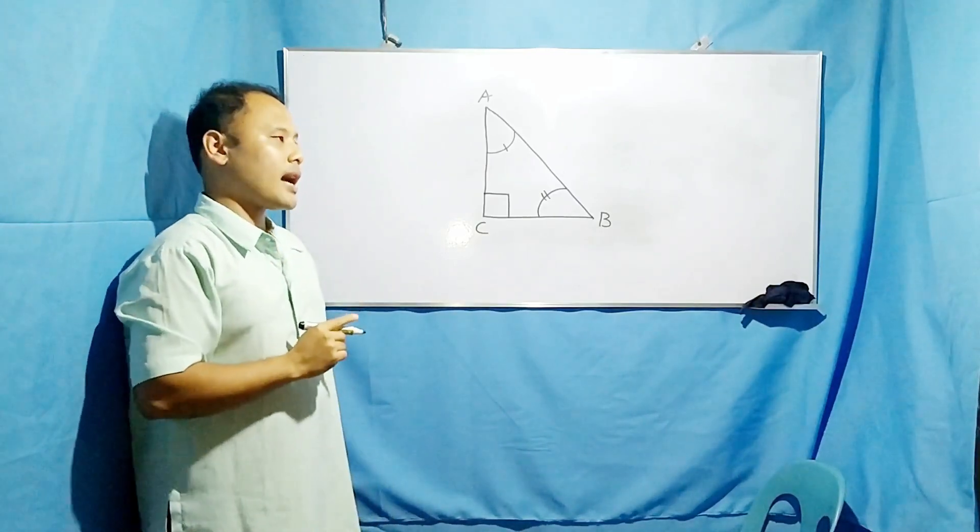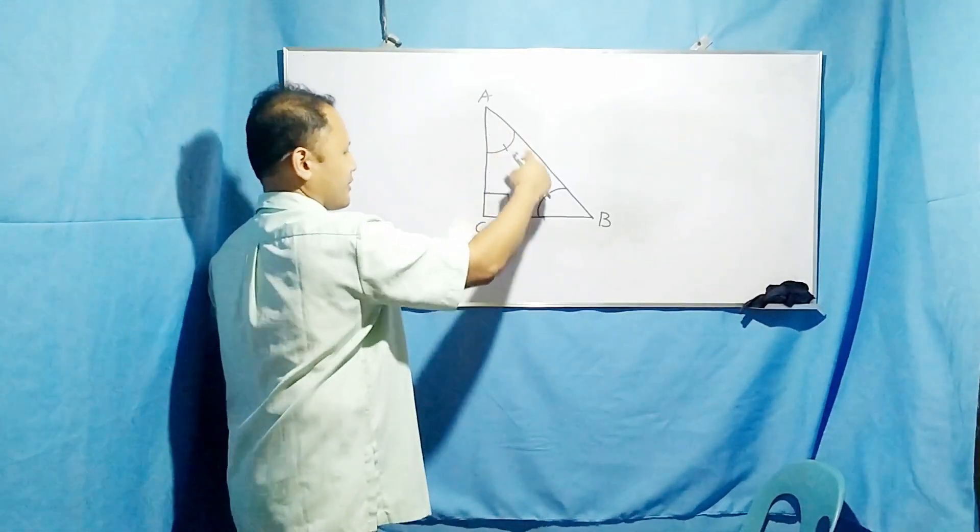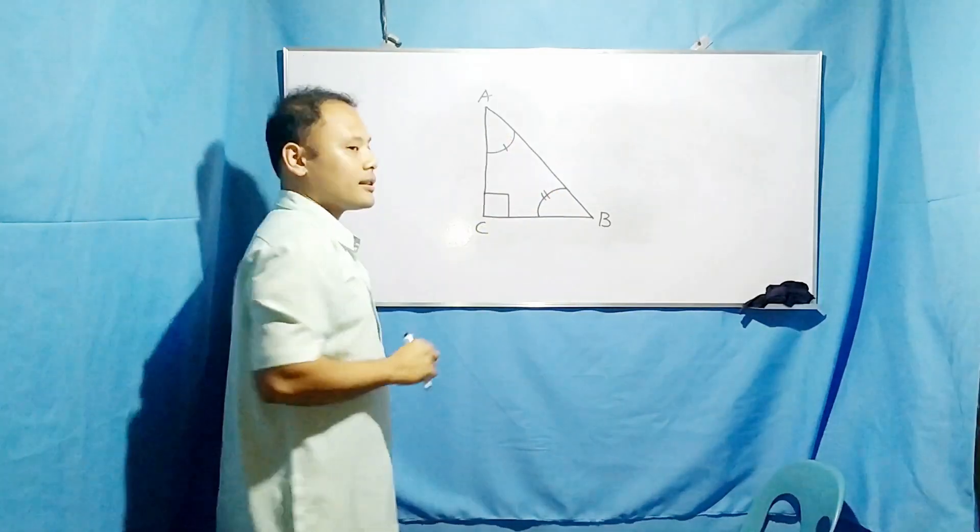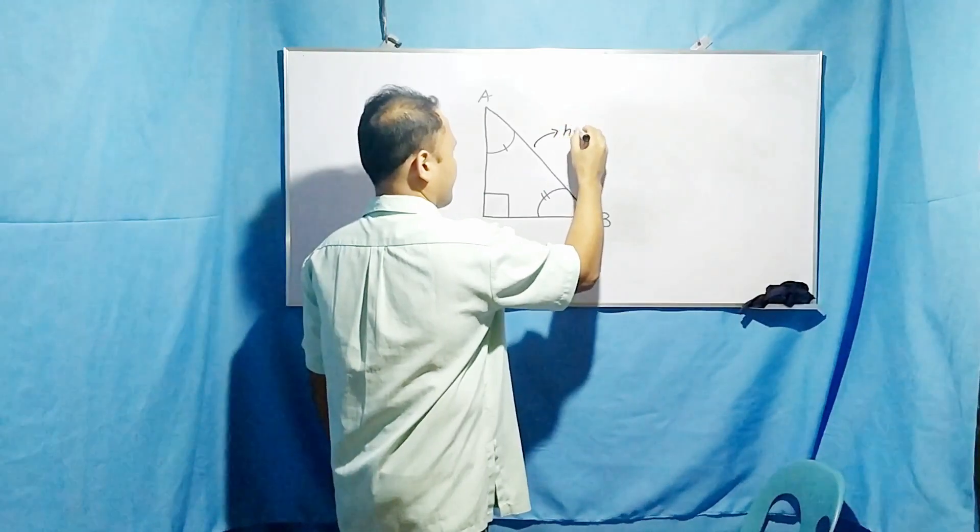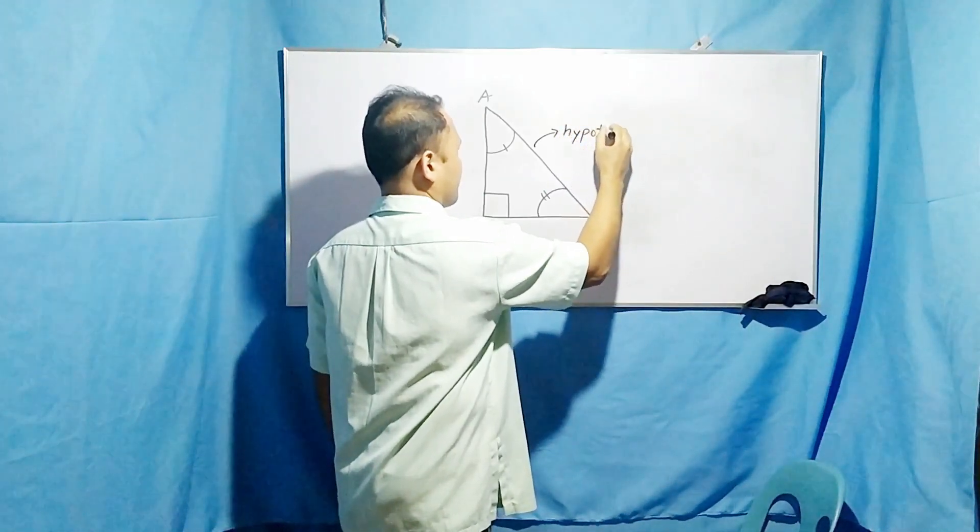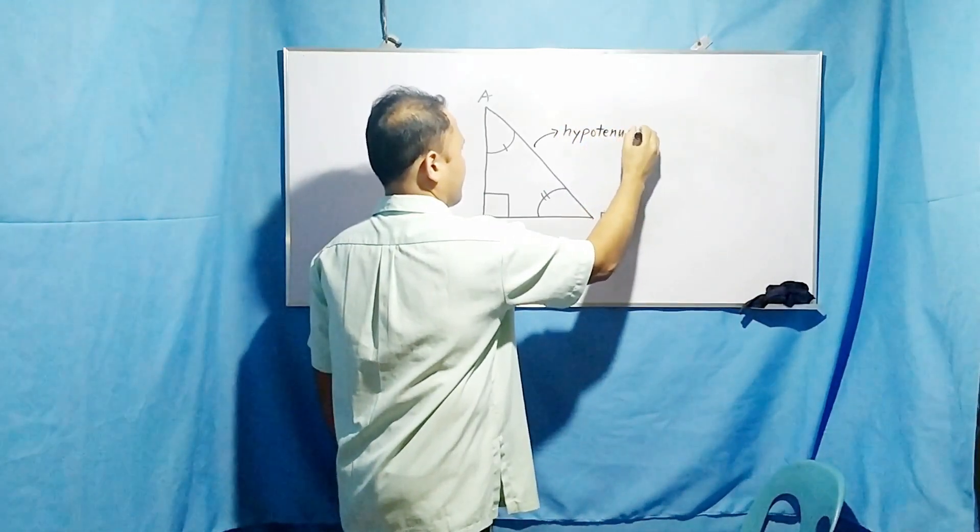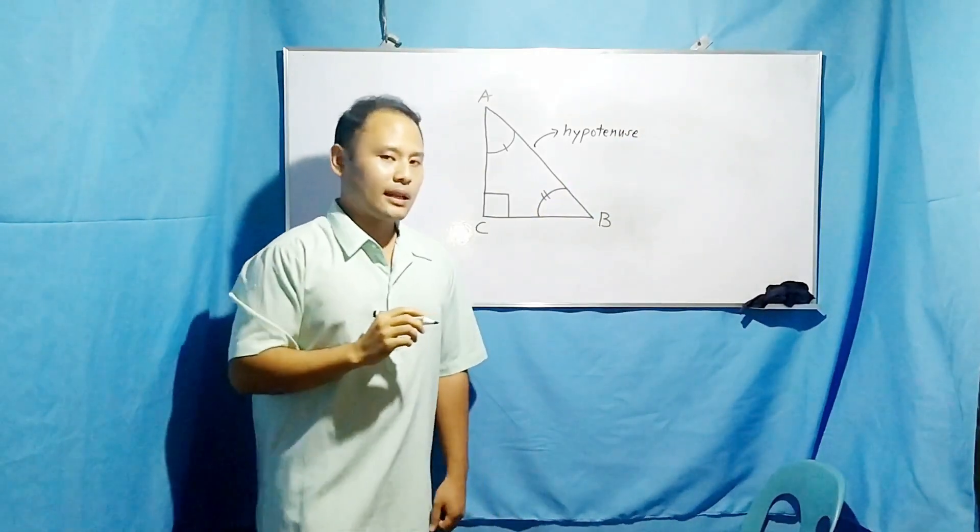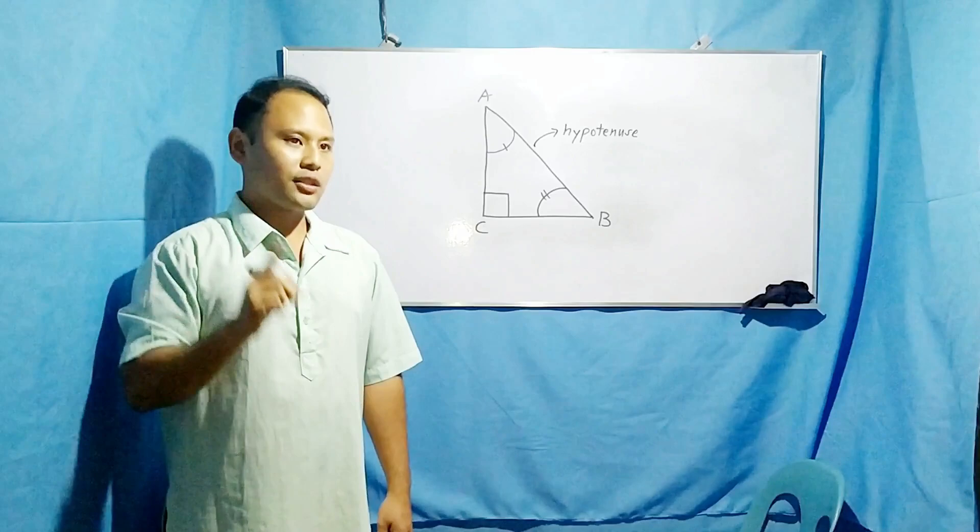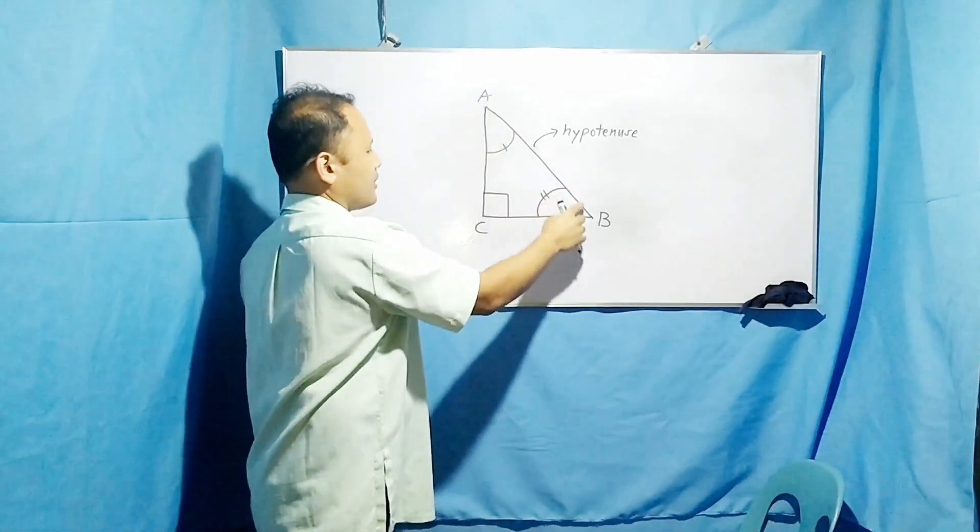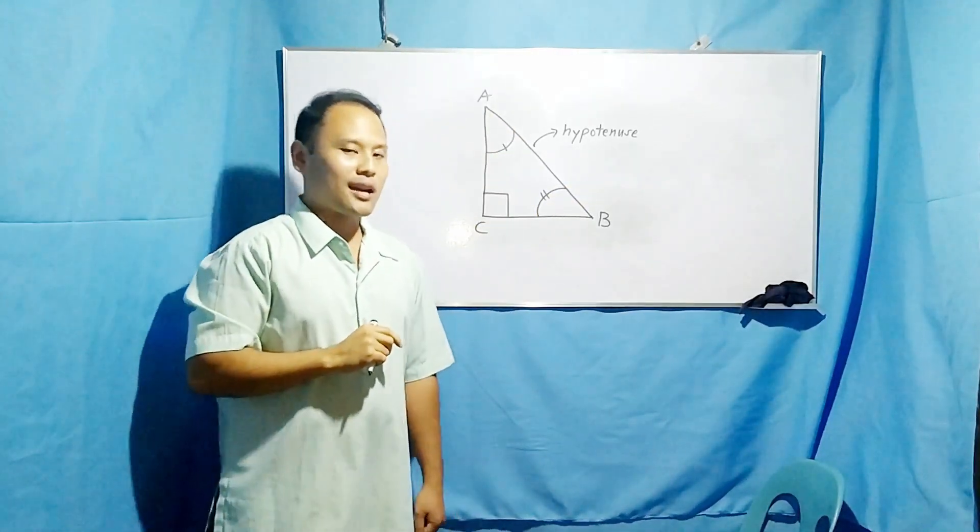Now let me introduce the slanting or the diagonal side. It is called the hypotenuse. The hypotenuse can be regarded as a line segment connecting two endpoints such that the endpoints are the vertices of acute angles.